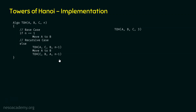The first call is TOH(A, B, C, 3) — this is the problem we want to solve. We first need to check the base case: is N equal to 1? No, we can observe that N is 3, so the base case is not satisfied. Hence, we need to move to the recursive case and execute the else block. In this else block, the first statement needs to be executed: we need to call TOH(A, C, B, N-1).